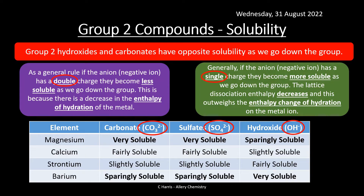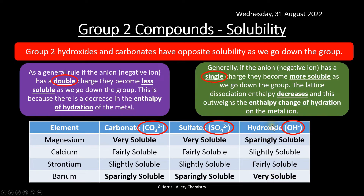The enthalpy change of hydration is the energy released when water molecules surround the ions broken apart through lattice dissociation. If the energy released is greater than the energy needed to break the ions apart, you're likely to have a soluble compound. For example, magnesium hydroxide is sparingly soluble, whereas barium hydroxide is really soluble — the energy released when water molecules are attracted to the ions is far greater than the energy required to break them apart.